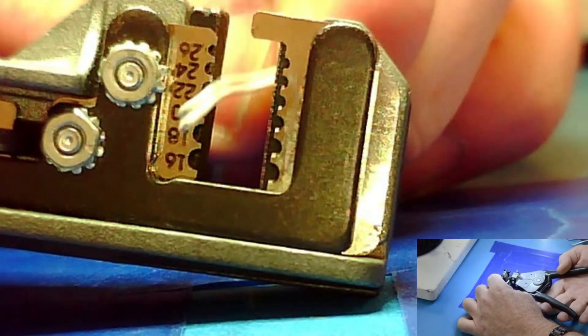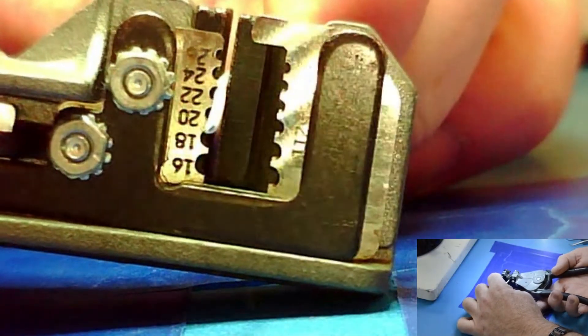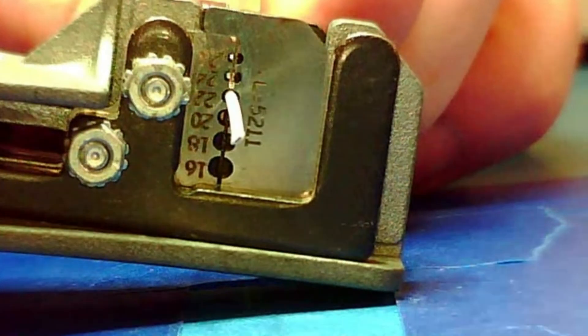Select the wire which needs to have the insulation removed and place the wire in the appropriately sized wire gauge hole. In this demonstration, a 22-gauge wire is in use.